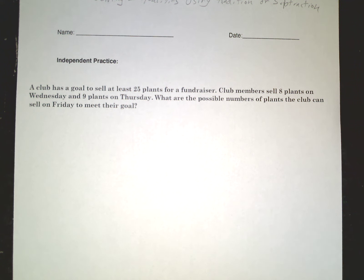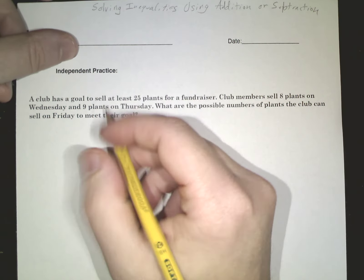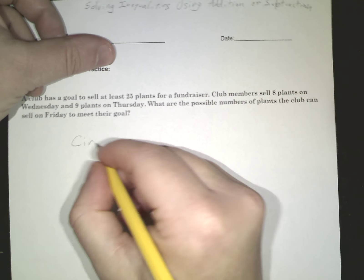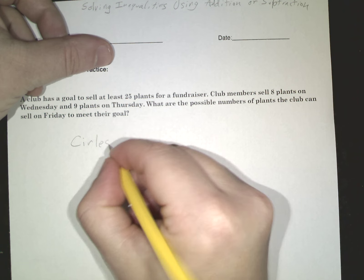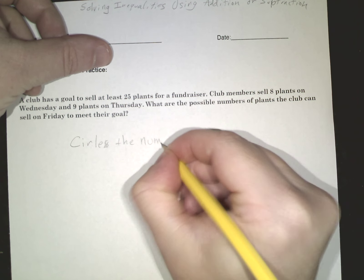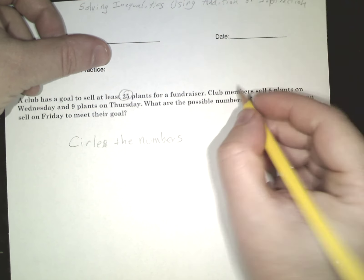Alright algebra students, last independent practice here. We're almost done with today's lesson. It's a word problem, lots of you rolling your eyes. We're gonna take the CUBES method first, which is circle the numbers. I'm writing this in pencil so if I mess up you guys can still read this. 25 plants, 8 plants, 9 plants to meet their goal.